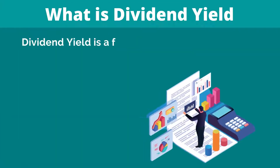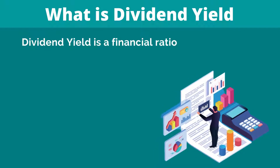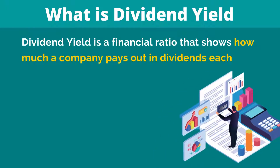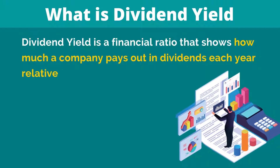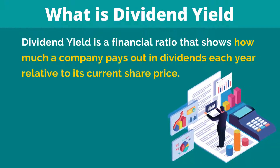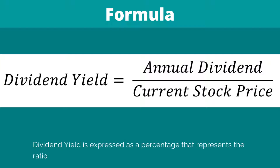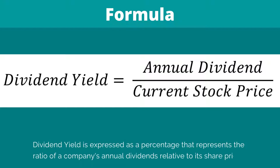So what is dividend yield? Dividend yield is a financial ratio that shows how much a company pays out in dividends each year relative to its current share price. The formula for dividend yield is equal to annual dividend divided by current stock price. Basically, it is expressed as a percentage that represents the ratio of a company's annual dividends relative to its share price.